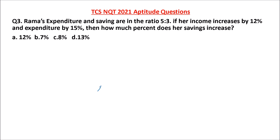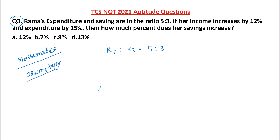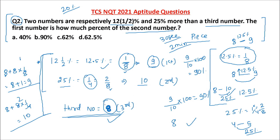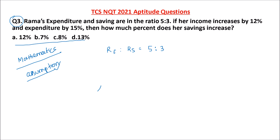Question number 3 is a good question from the topic ratio and proportion. Rama's expenditure and savings are in the ratio 5 is to 3. In aptitude, the main thing is assumption. If you are able to assume the correct value, you will get the answer easily. In the previous question also, you could have assumed 16, 32, 80 — whatever you want — because options are given in terms of percentage, and when options are in percentage, you can assume. But the assumption should be clear and should make your problem easy.